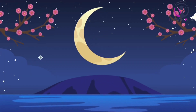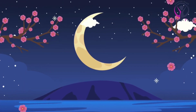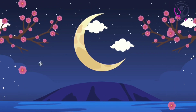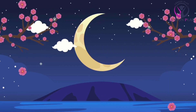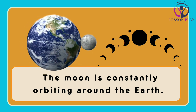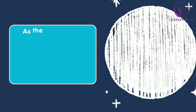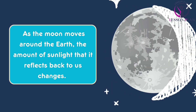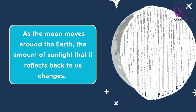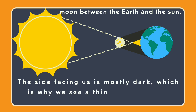You must have observed that the moon seems to change shape over the course of a month — why it goes from a thin sliver to a full round orb and back again. It's all because of one simple fact: the moon is constantly orbiting around the earth. As the moon moves around the earth, the amount of sunlight that it reflects back to us changes. When the moon is between the earth and the sun, the side facing us is mostly dark, which is why we see a thin crescent or no moon at all.